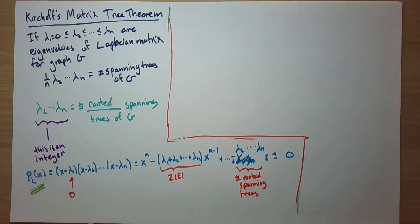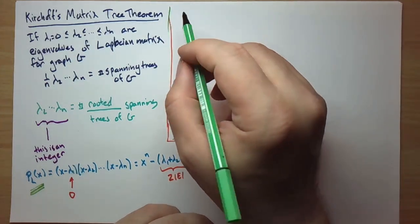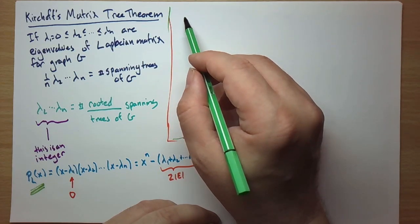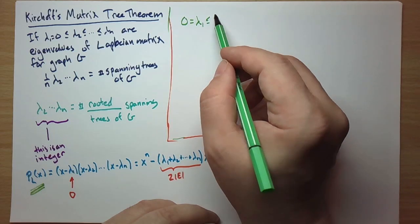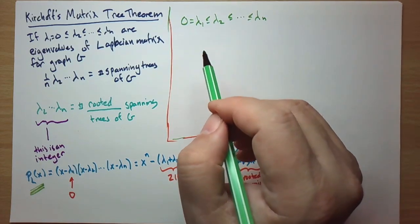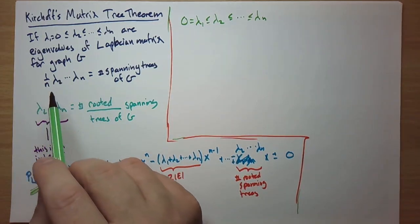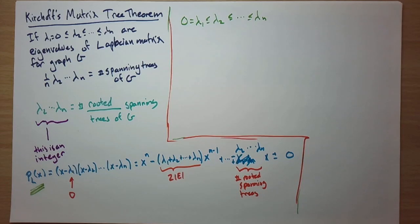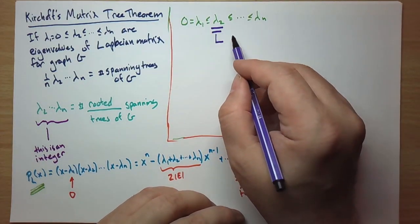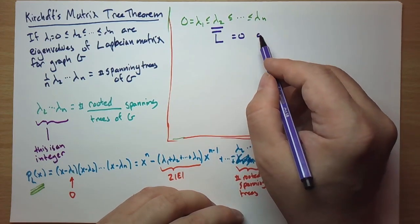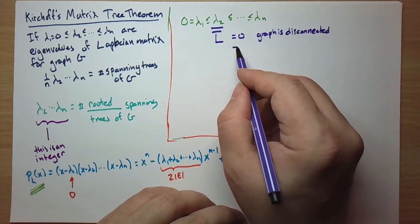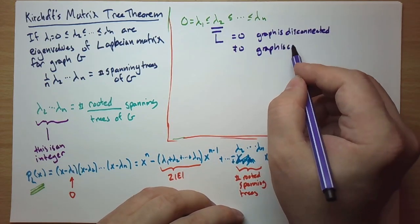One topic that came up last time: when finding the number of spanning trees, someone asked what if lambda_2 is zero? If lambda_2 is zero, the product is zero and there are no spanning trees. We already know that lambda_2 = 0 means the graph is disconnected — more than one component — and if lambda_2 ≠ 0, then the graph is connected.